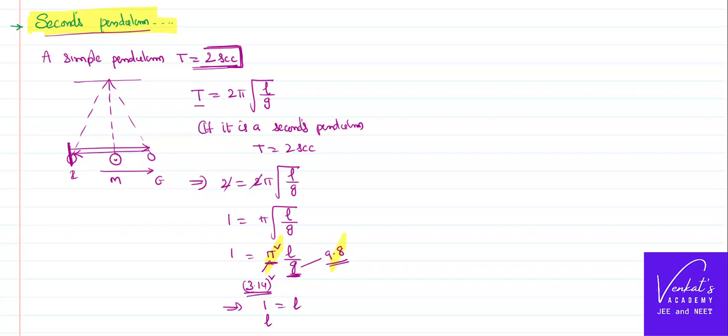That means length of the seconds pendulum is 1 in SI system, that is 1 meter approximately or 100 centimeters approximately. Why I am saying approximate is 9.8 g and π² is approximately equal.